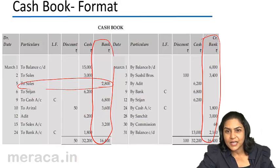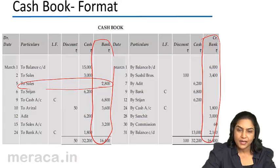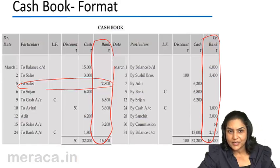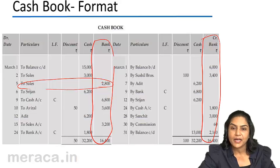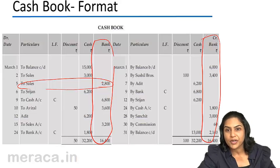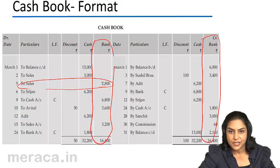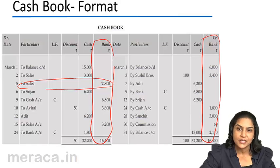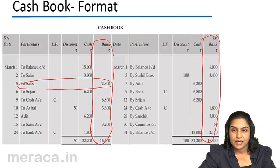Basically, when money comes into the bank, the bank account is debited. It would be bank account to debtor, bank account to sales, bank account to whatever receipt. So bank account is debited whenever money is put into the bank.